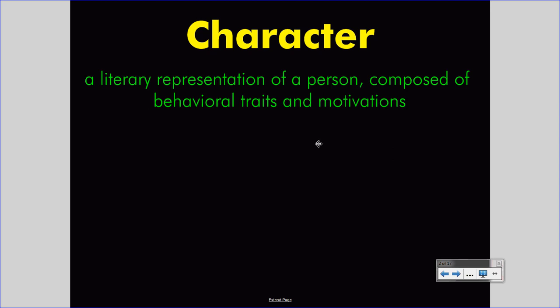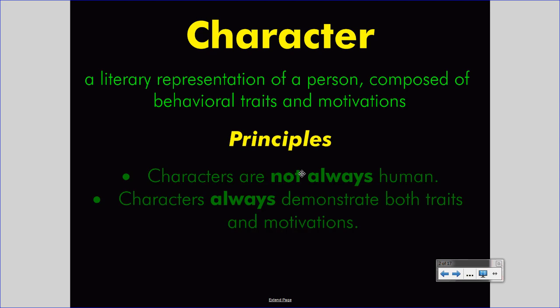Let's understand some principles associated with this definition. Characters are not always human, as I've already mentioned. And characters always demonstrate both traits and motivations. Every time you meet a character in a piece of literature, you can understand their traits and you can determine what they want. Those traits may be simple. Those motivations may be simple. But they are always both present.